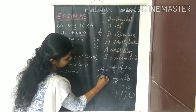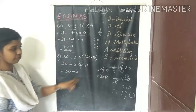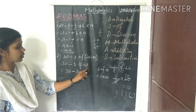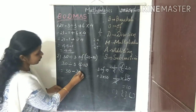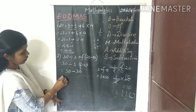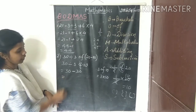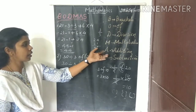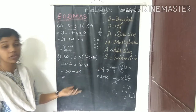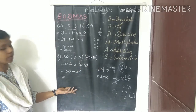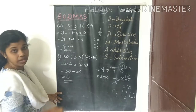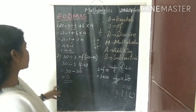So we write: 30 ÷ 3 of 10. Now 3 of 10 equals 3 into 10 equals 30. Then we have no multiplication, no addition. Last operation is division: 30 ÷ 30 equals 1. So the answer is 1. Wait — correction: it's 30 ÷ 3 of 10. 3 of 10 is 30, then 30 ÷ 30 equals 1.